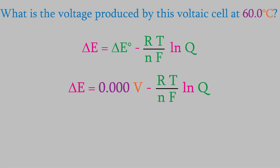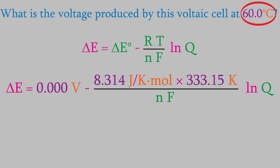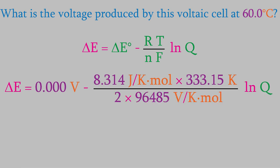Next, we need R, the gas law constant, then the temperature. The temperature is 60.0 degrees Celsius, which is 333.15 Kelvin. Next is N, the number of electrons transferred in the reaction, which turns out to be 2. Finally, is the Faraday constant.